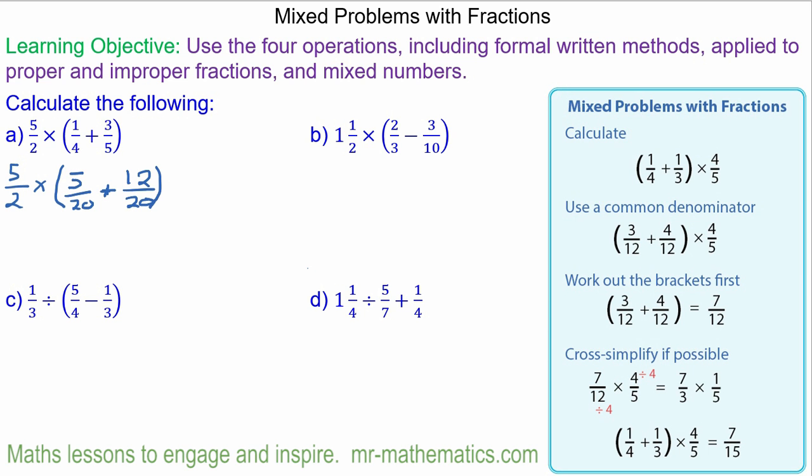So now we can work out this addition. So that will be five halves times seventeen twentieths.